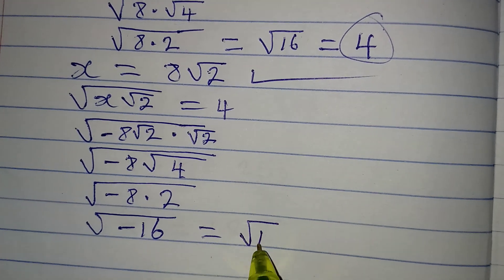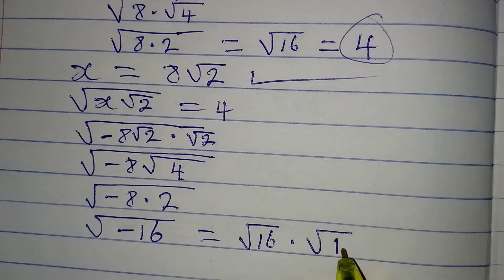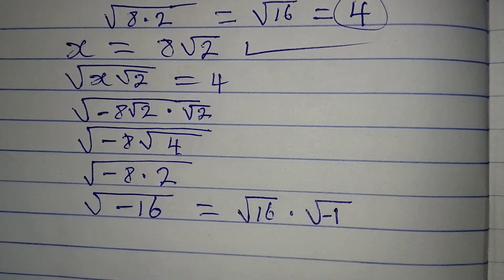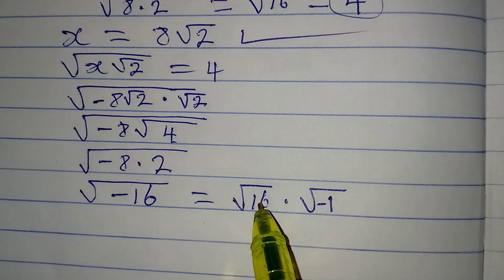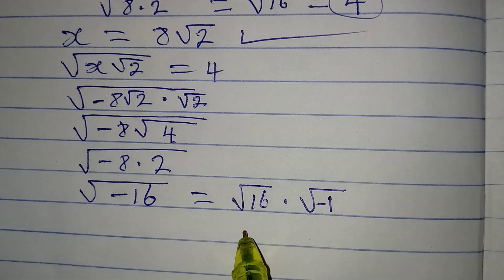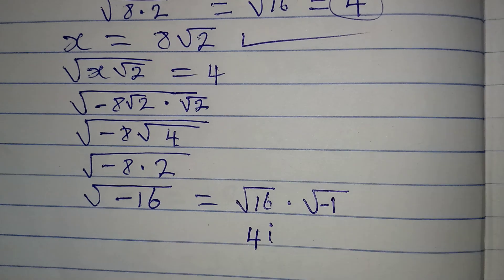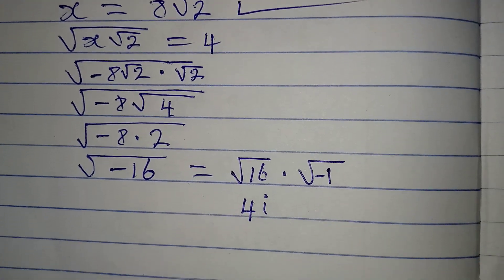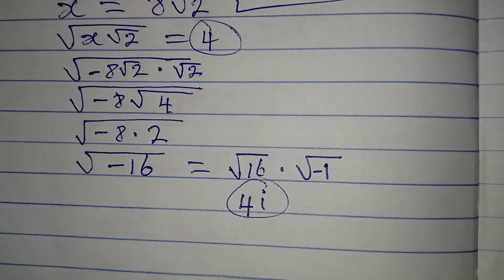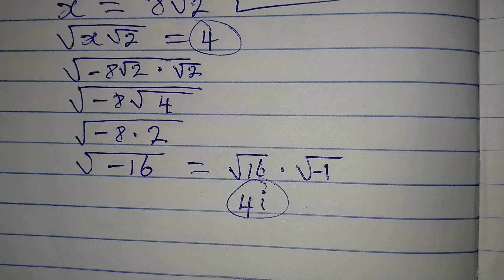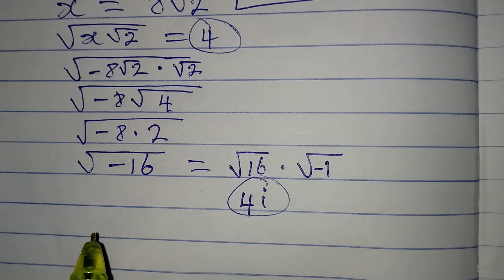This means we have minus 16 inside the square root, which is the same as the square root of 16 multiplied by the square root of negative 1. The square root of 16 is 4, and the square root of negative 1 is the imaginary number i. So instead of having 4, we are getting 4i, which means it does not satisfy the given equation, as it leads to a complex number.